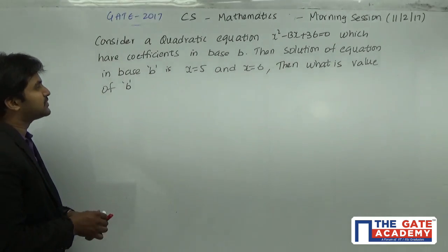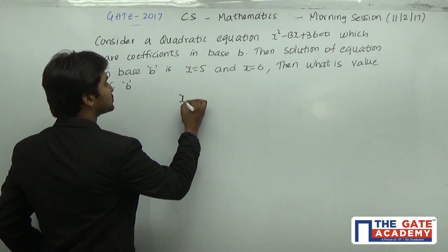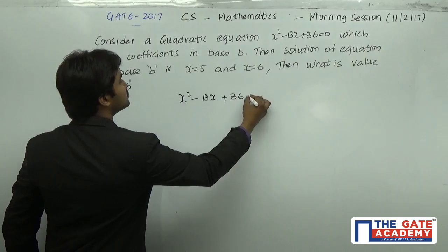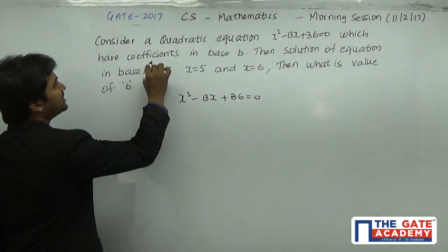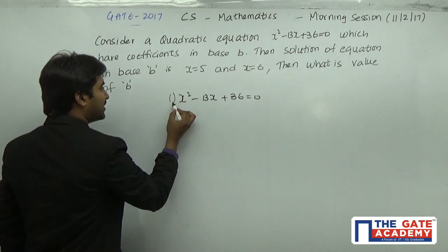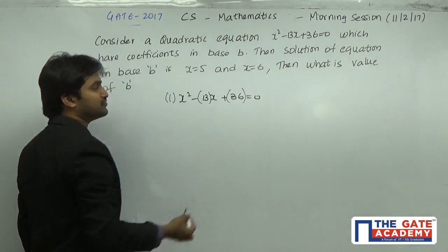Here the quadratic equation that is given is x² - 13x + 36 = 0, and it is given that the coefficients are of base B. What are the coefficients? Here 1 is the coefficient, 13 is the coefficient, and 36 is the coefficient.